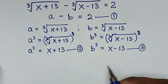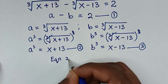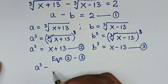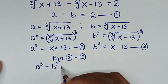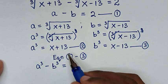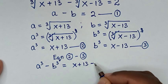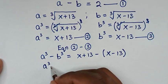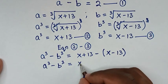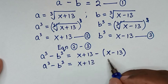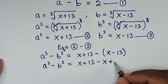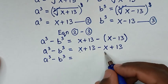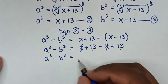In the next step, we take equation 2 minus equation 3. On the left side we get a³ minus b³, and on the right side we get (x + 13) minus (x - 13). The x terms cancel, giving 13 + 13 = 26. So a³ minus b³ equals 26.